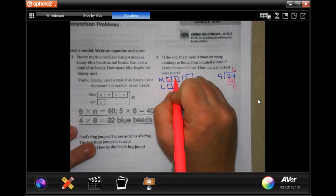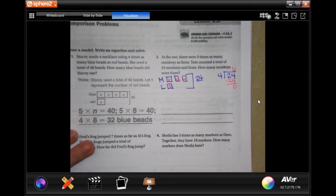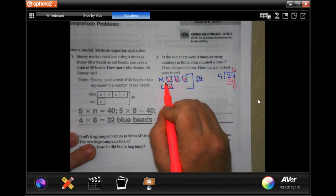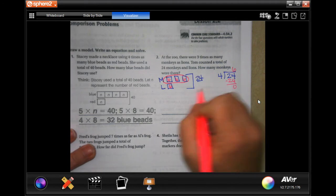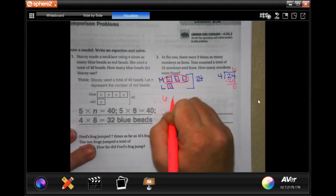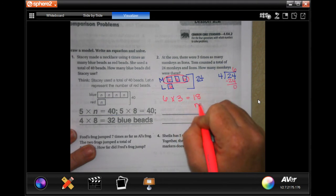That means that each one of these boxes is worth six. So how many monkeys were there? Well, monkeys is all of these. We have six and we have three of them. That's 18 monkeys.